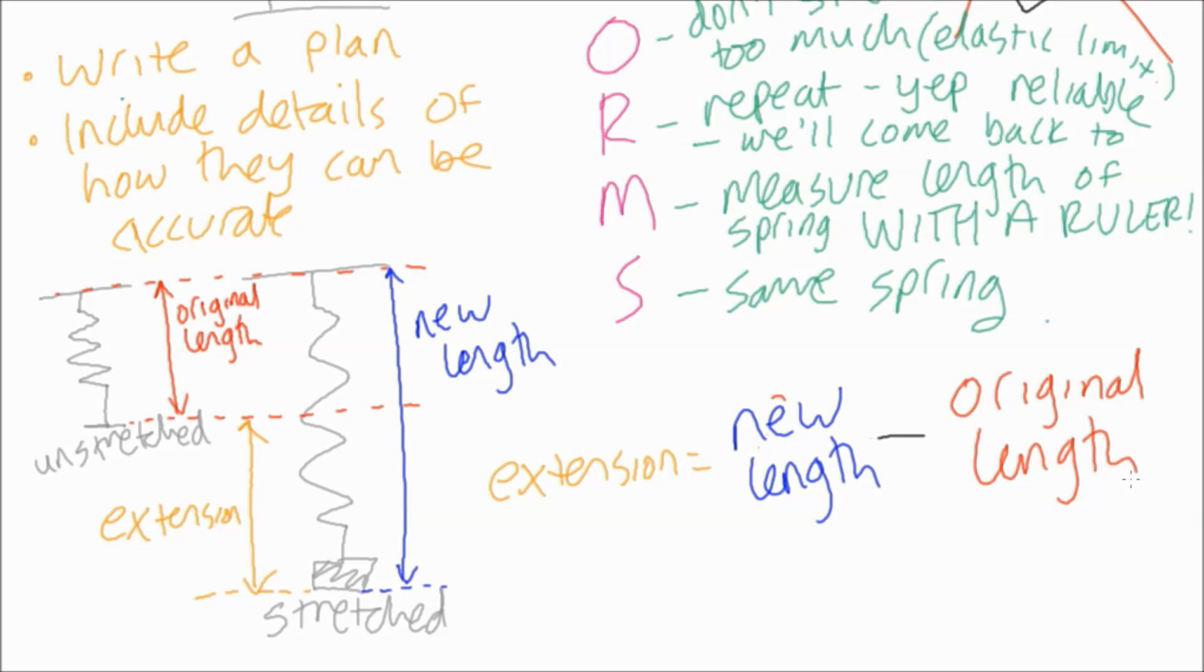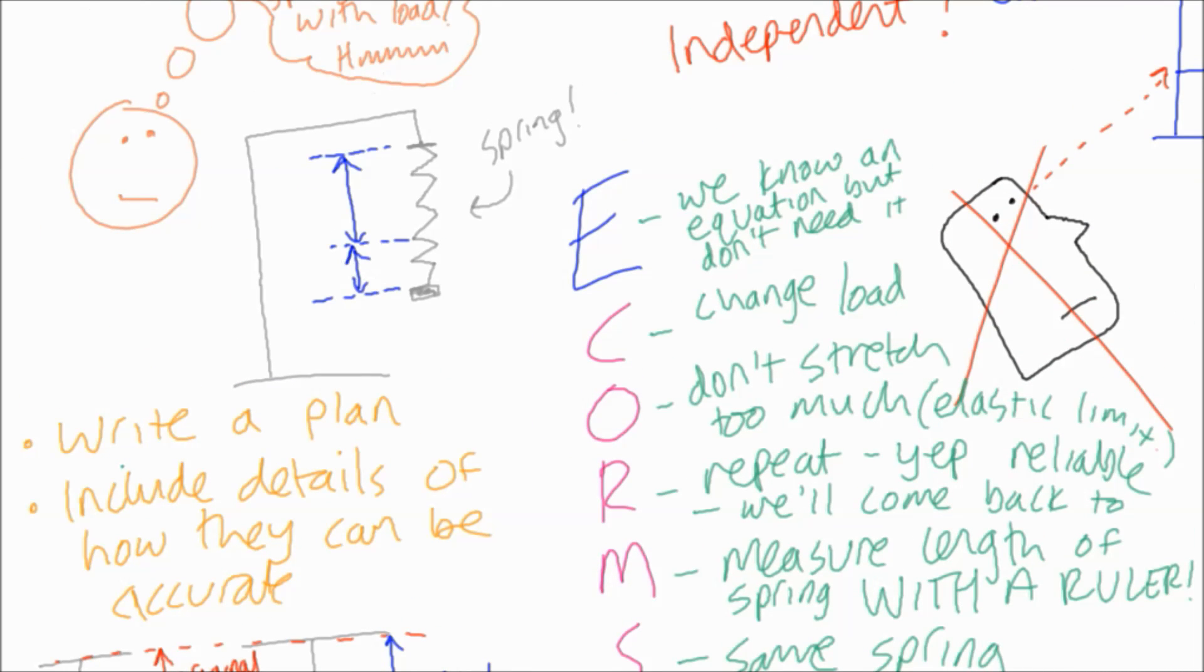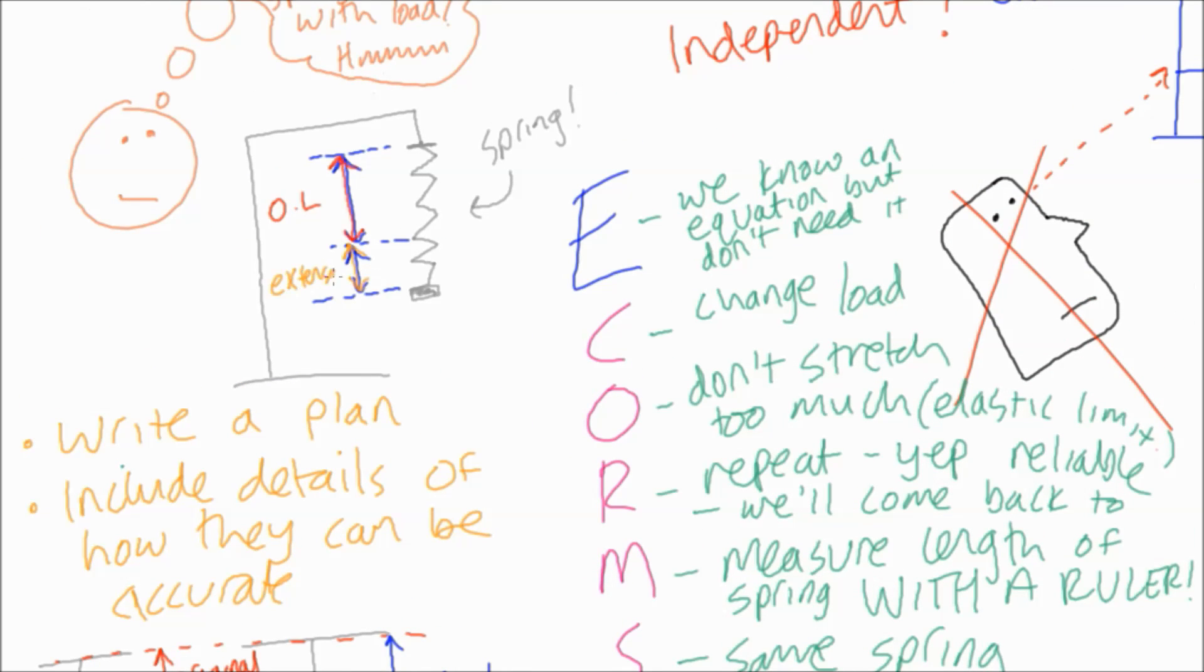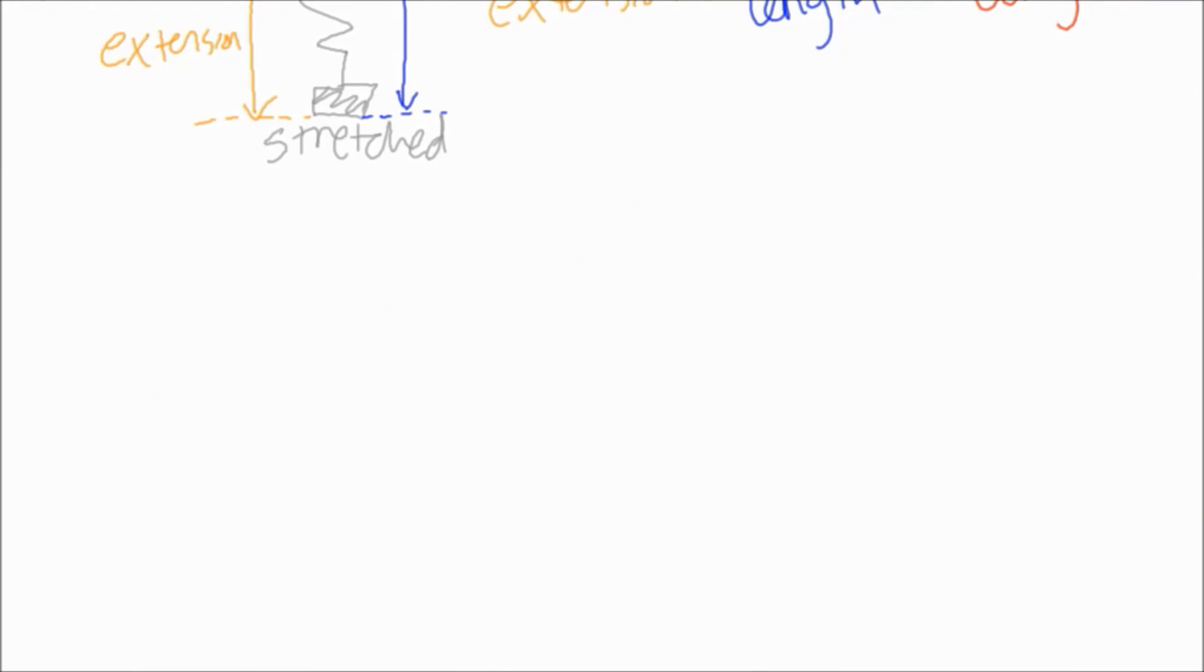Okay so that's worth a mark there, figuring out what the extension is. Don't forget it's worth labeling this sort of thing on a diagram. Also, if you know what the graph's going to look like, it's sometimes worth sketching a graph. So for this one you know that it's a straight line to the origin, and it's worth labeling your axes on your graph sketch, otherwise it's just a series of lines.